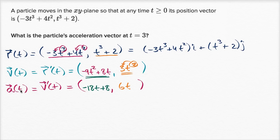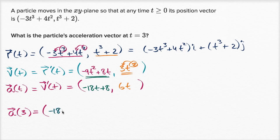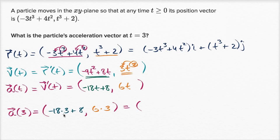By taking the derivative of the position vector-valued function twice, we have the acceleration function. Now we evaluate it at t equals three. The x component is negative 18 times three plus eight, and the y component is six times three. Negative 18 times three is negative 54, plus eight is negative 46. Six times three is 18.